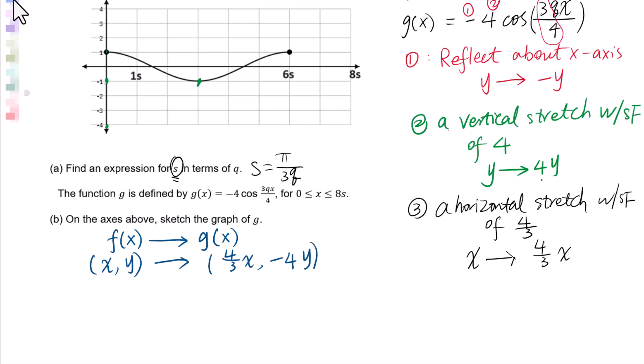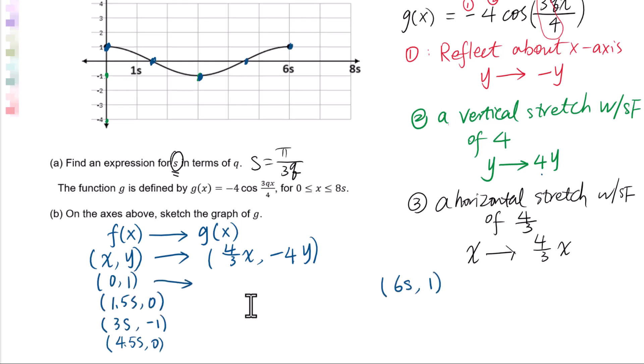Let's get critical points from f(x). 1, 2, 3, 4, 5. All x-coordinates times 4/3. Y-coordinates times -4. Then let's plot all the transformed coordinates.